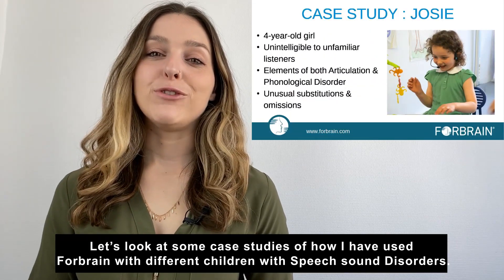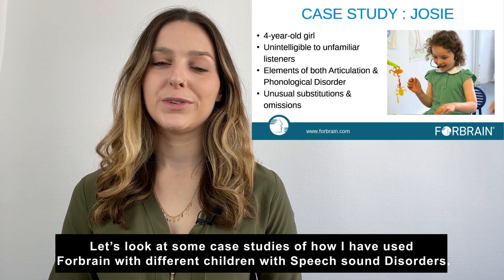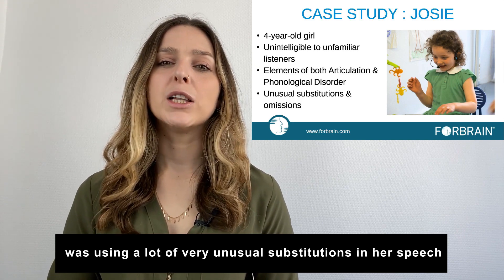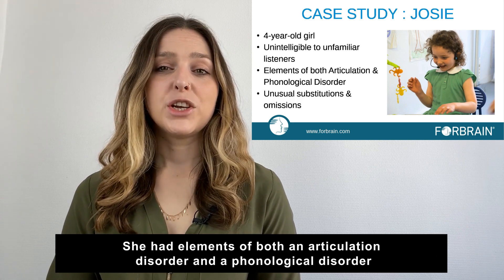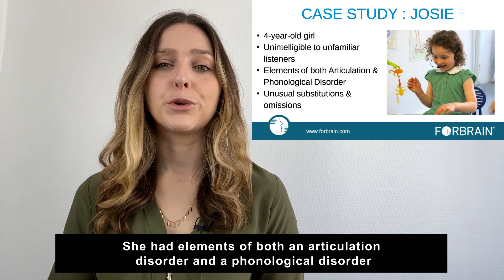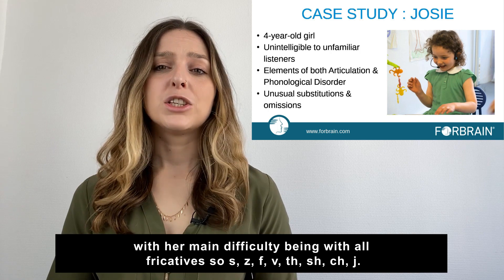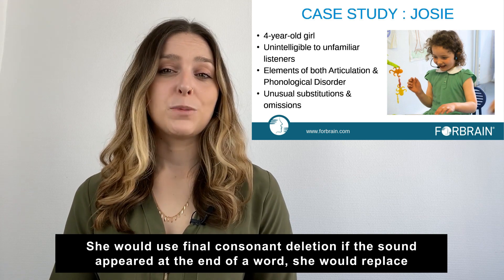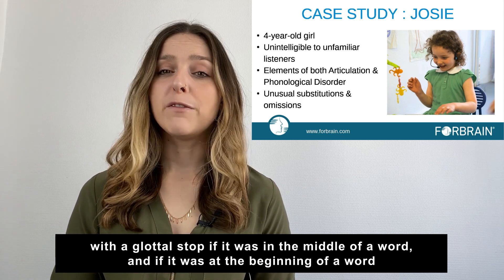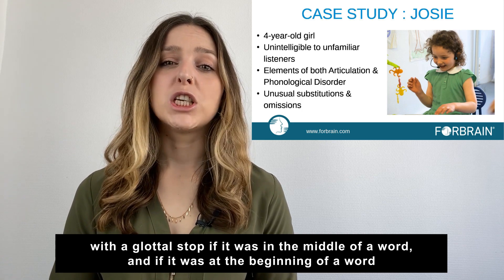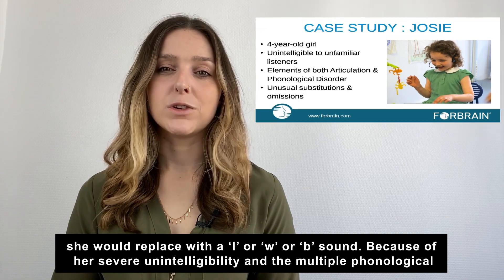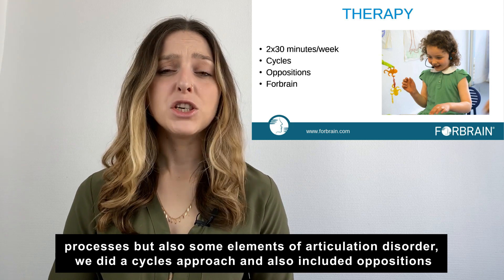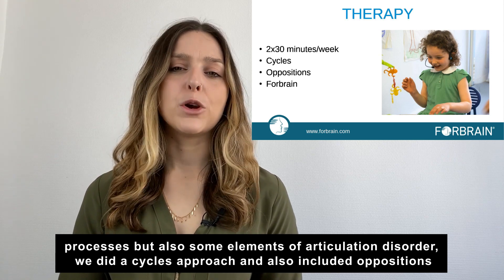Let's look at some case studies of how I have used the Forebrain for different children with speech sound disorders. Josie was a four-year-old girl that was completely unintelligible to unfamiliar listeners because she was using a lot of very unusual substitutions in her speech. She had elements of both an articulation disorder and a phonological disorder, with her main difficulty being with all the fricatives — s, z, f, v, sh, ch, and j. She would use final consonant deletion if the sound appeared at the end of a word, replace it with a glottal stop if it was in the middle of the word, and if it was at the beginning of a word she would replace it with an L, a W, or a B sound. Because of her severe unintelligibility and the multiple phonological processes but also some elements of an articulation disorder, we did a cycles approach but also included oppositions.